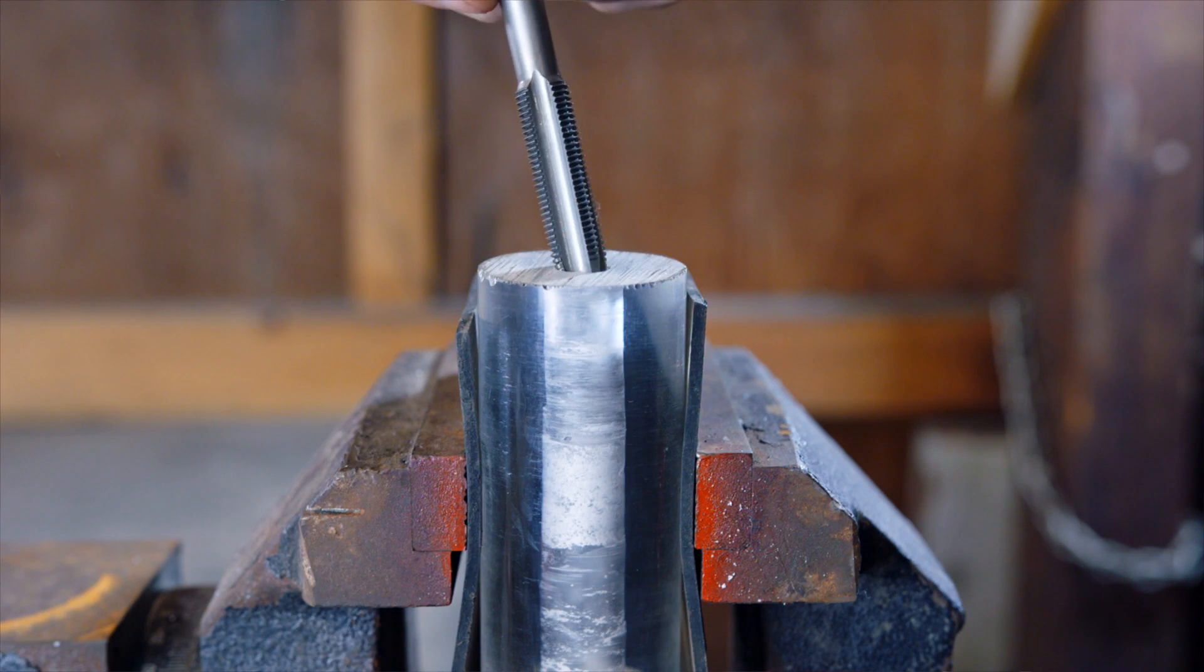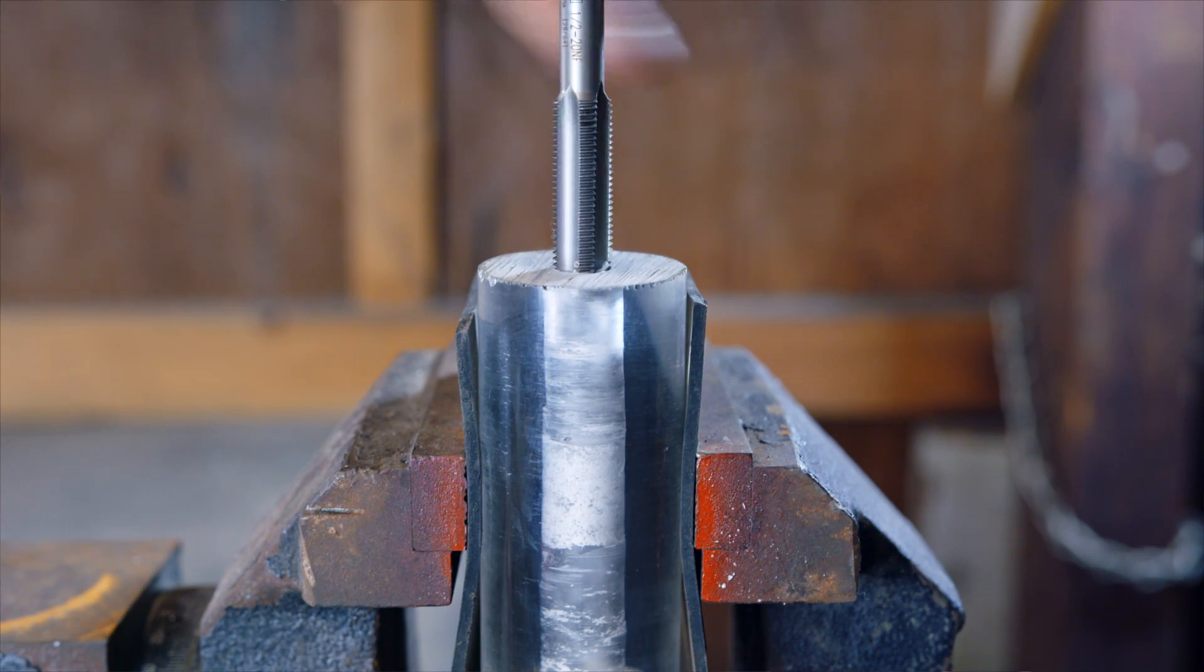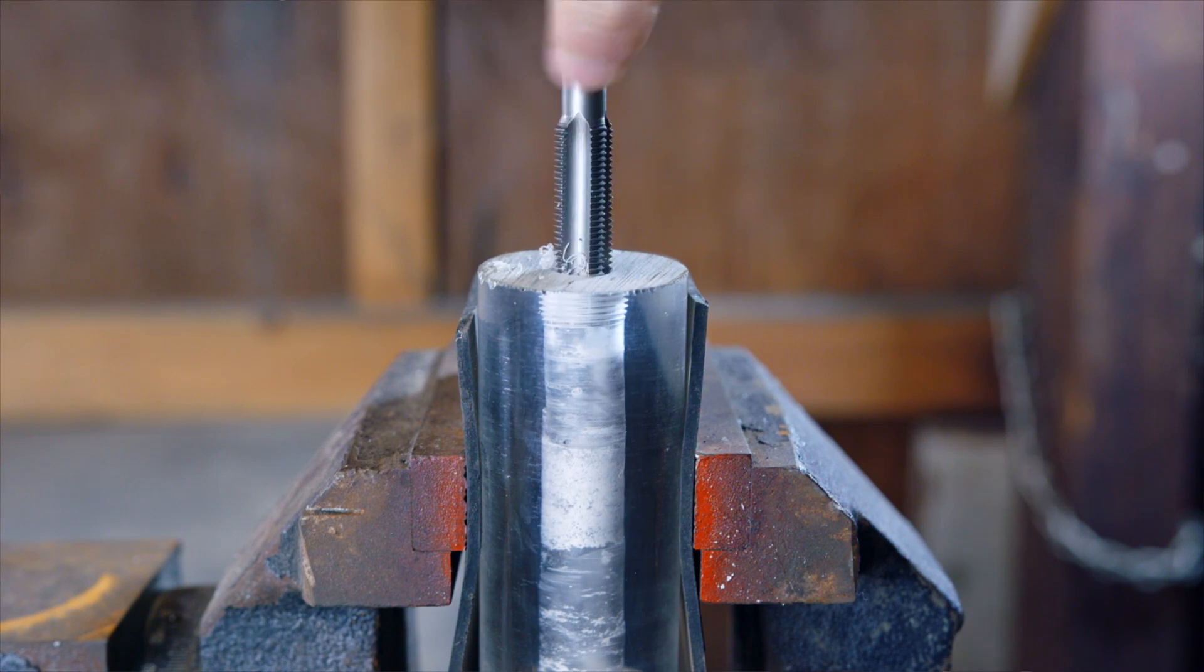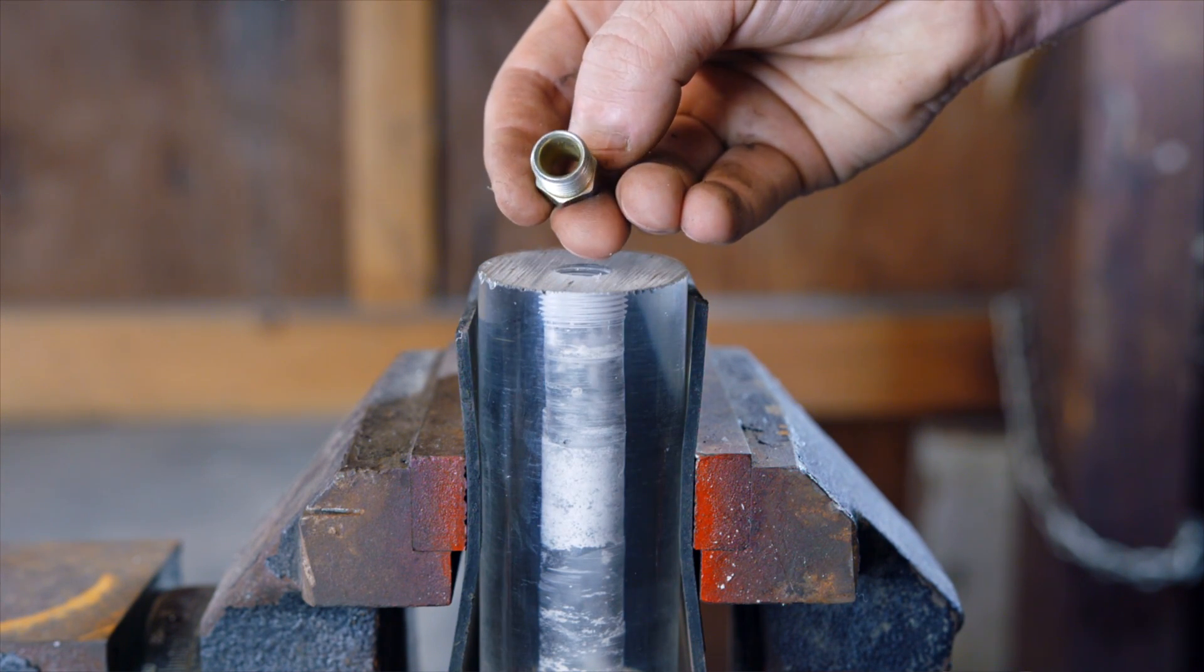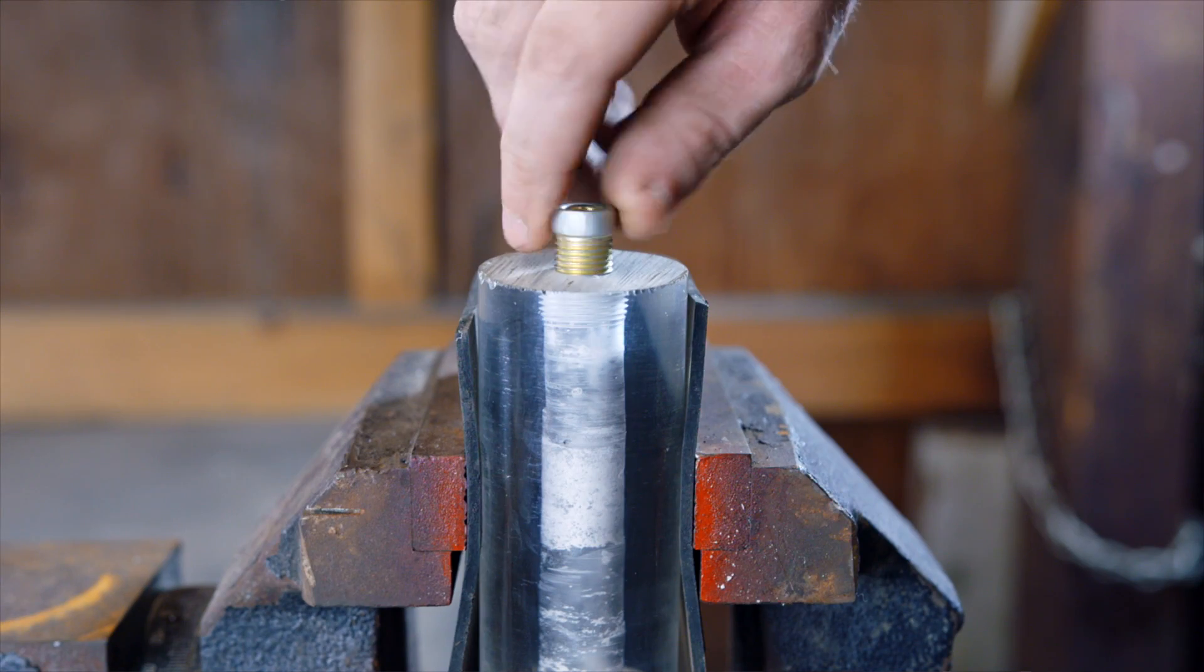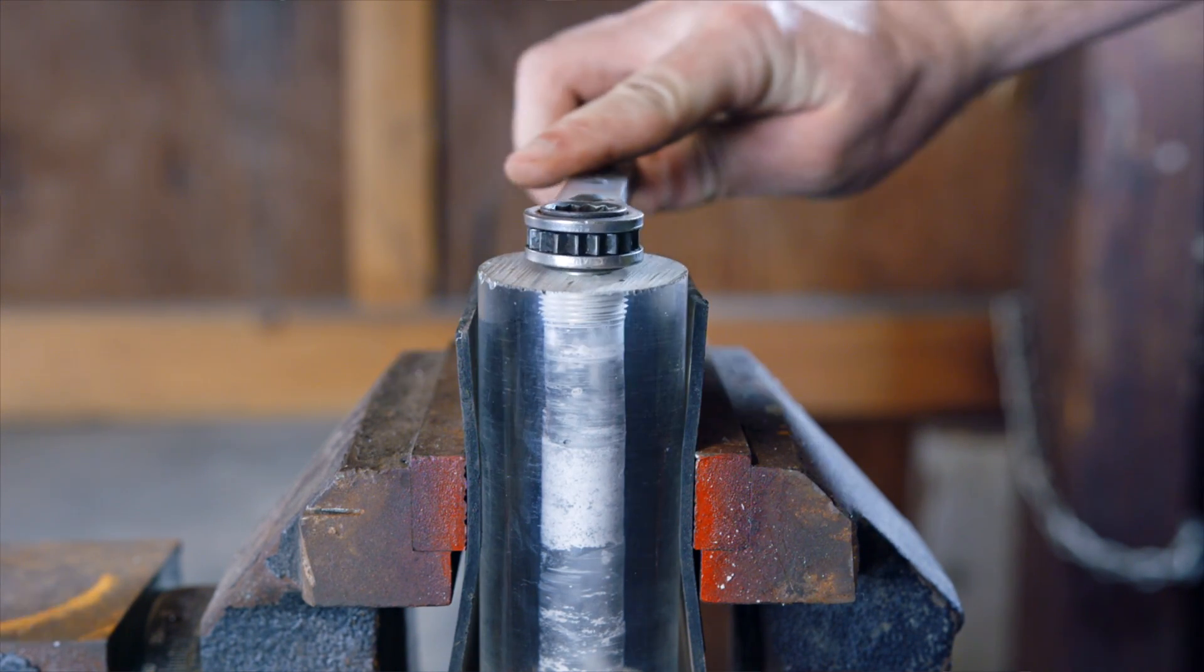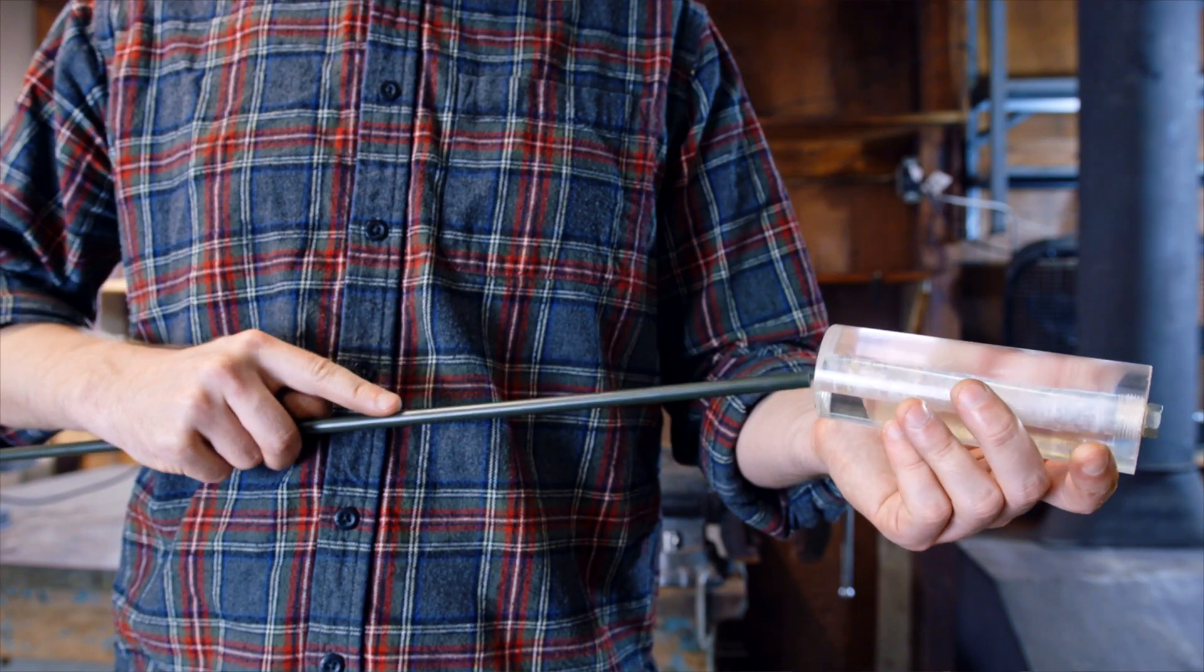With the core completed, I then tapped some threads on one side so I would be able to more easily attach my oxygen supply. I decided to use a steel brake line for the input, and so the threads that I tapped were the correct size for a brake line fitting. I then threaded a length of line through the engine and out through this fitting.